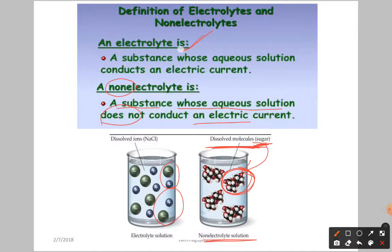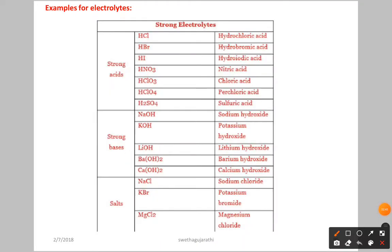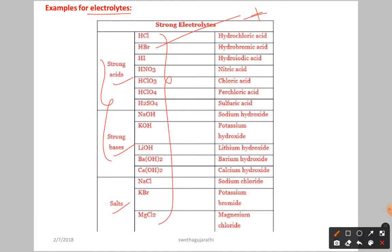Electrolytes simply conduct electricity. Non-electrolytes, when dissolved in water, form an aqueous solution that does not conduct electric current. Sugar, once dissolved in water, does not conduct electric current — that is called a non-electrolyte. Now let us see examples for electrolytes: just remember strong acids, strong bases, and salts. All these compounds dissociate into positive and negative ions — cations and anions. These are examples of electrolytes.